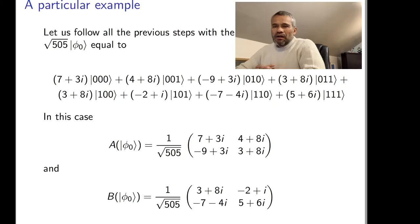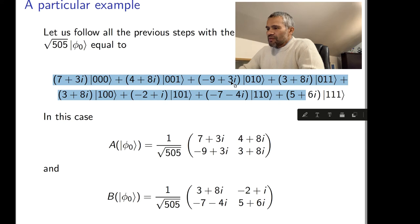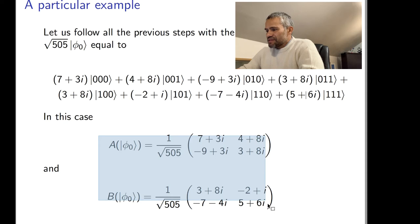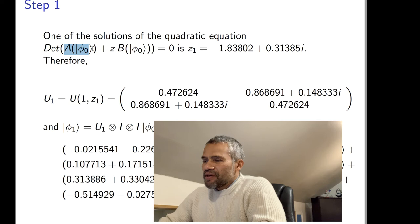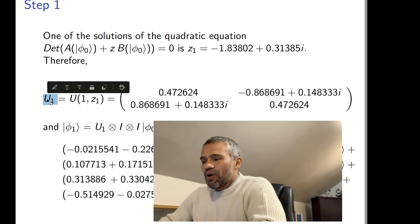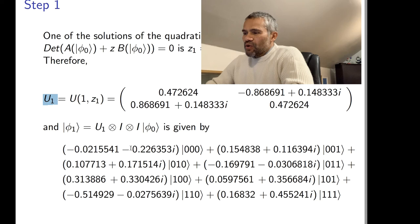Let's do a particular example. Suppose our initial state is the state obtained by normalizing a given expression. Every 3-qubit state defines two matrices, and in this case these are the two matrices A and B. With these two matrices, we define our first unitary matrix U1 by considering the 2-by-2 matrix A + C·B, computing its determinant to get a quadratic equation, and solving it. This is one solution, and then we define our first U1 as U(1, C1).